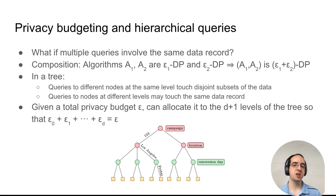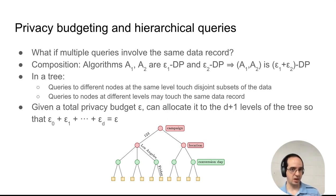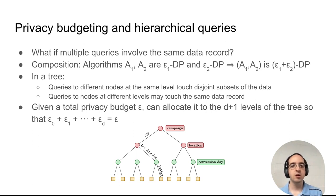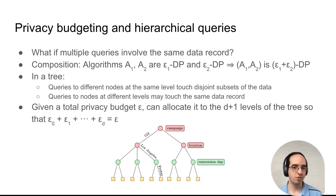What this means is, given a total privacy budget, we can split it into separate privacy budgets for the different levels of the tree, so that the sum of these privacy budgets is our total budget epsilon. And then we can issue queries to level i of the tree adding noise 1 over epsilon_i to each such query.